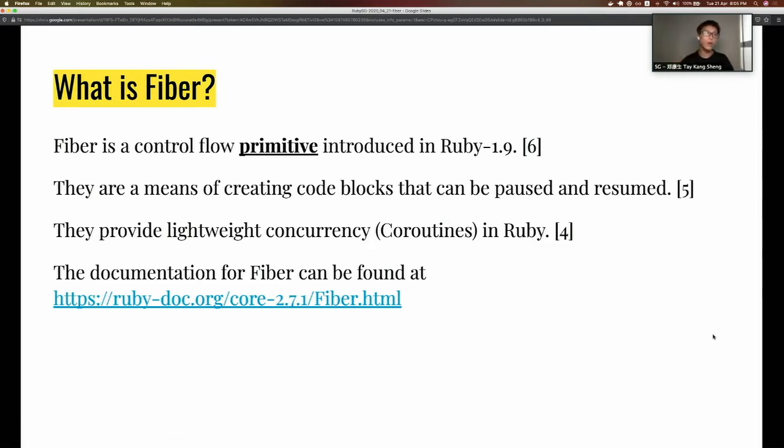First and foremost, what is Fiber? Fiber is a control flow primitive introduced in Ruby 1.9. What is a control flow primitive? Probably the most common control flow primitive in Ruby is if-else, which lets you build paths in your code.